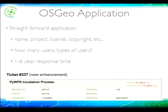Comparing the two application processes: an OSGEO application is a bug ticket requesting fairly straightforward information — project name, license, user base, industries served. OSGEO is very much concerned about how viable your project is. Currently, entering incubation can take between one and six years due to limited volunteer capacity. For example, the PyWPS project lead is on the OSGEO board and opened his request six years ago.